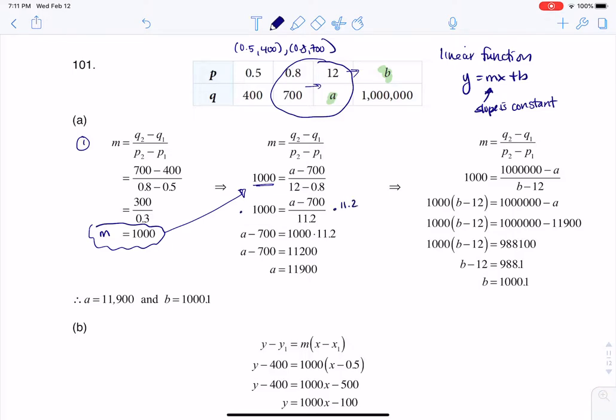Then I multiply both sides by 11.2. This will cancel and leave me with a minus 700. You see me writing a minus 700 equals 1,000 times 11.2, and when you multiply that out, that's 11,200. I move the 700 over, and there I am with my a value. So I found one of my constants.